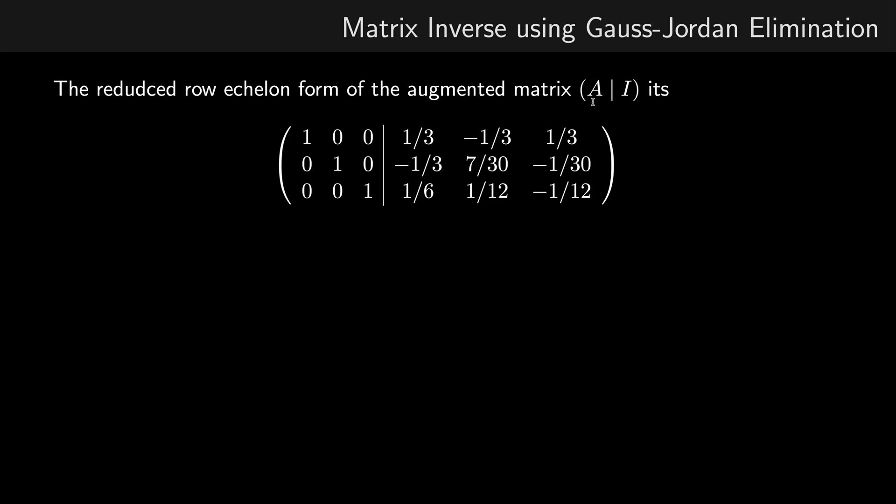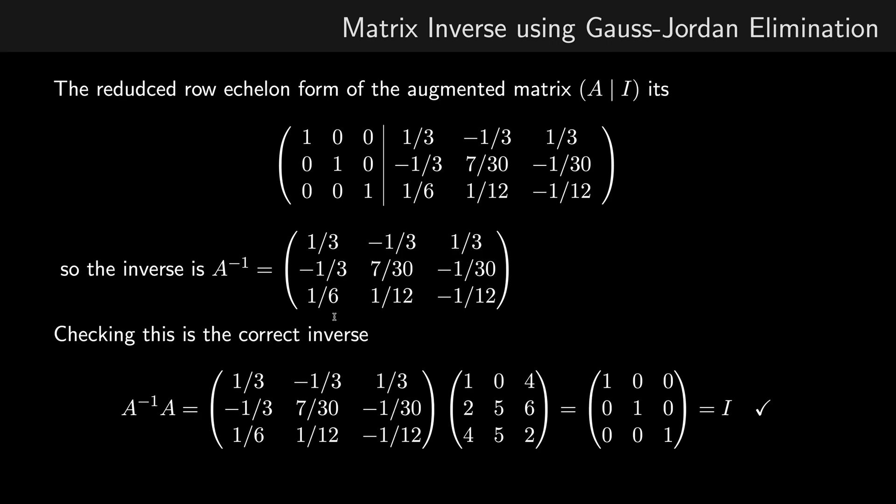Remember, this is the reduced row echelon form of the augmented matrix (A|I). The matrix on the right of the partition is the inverse A^-1, so we can simply read off the values. We can check that it's the inverse by multiplying by A.